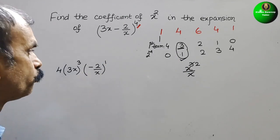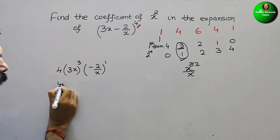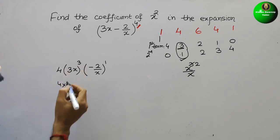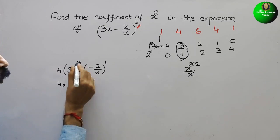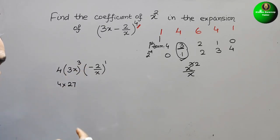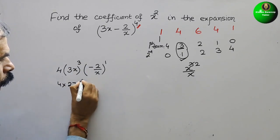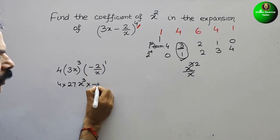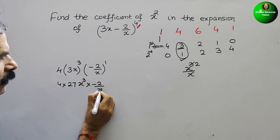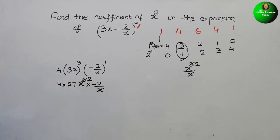Now solve this. Here you can see 4 into 3³ is 27, and x³ is x to the power of 3, into this value minus 2 by x. So now x³ and x, here comes x².